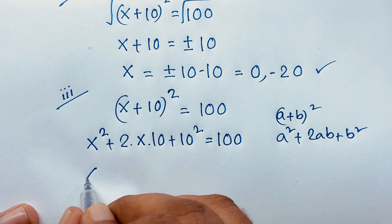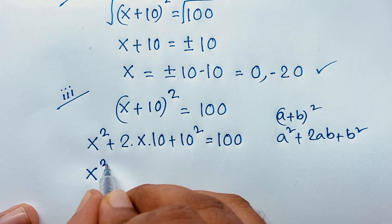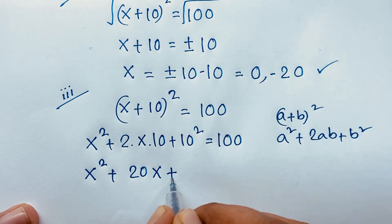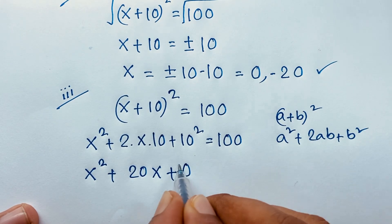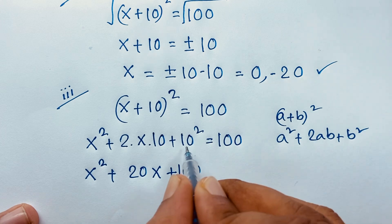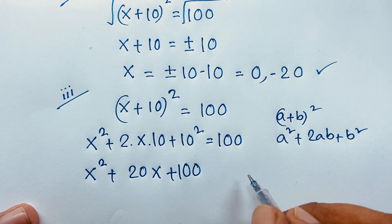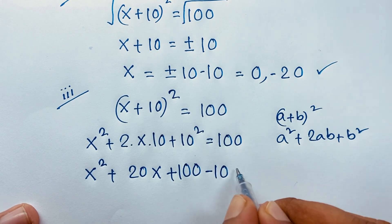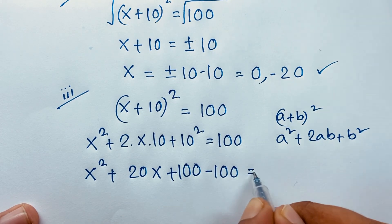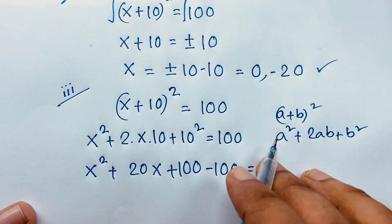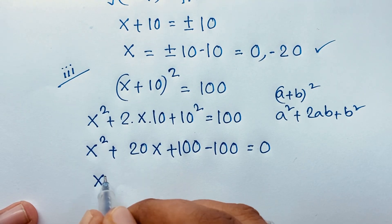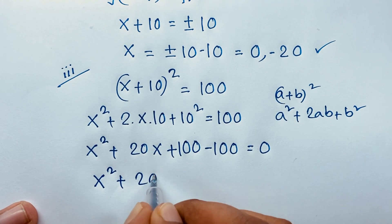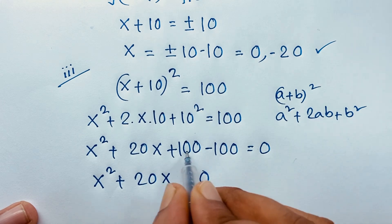So it will be x² + 20x + 100 = 100. Since 10² = 100, if I move this 100 to this side it will be negative 100, so x² + 20x = 0.